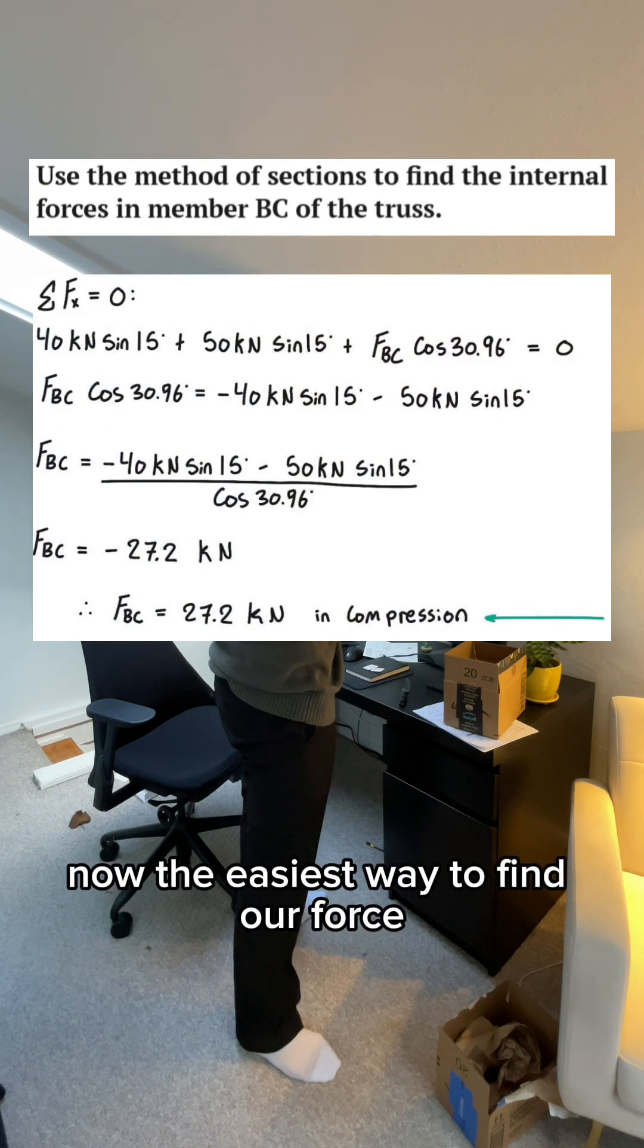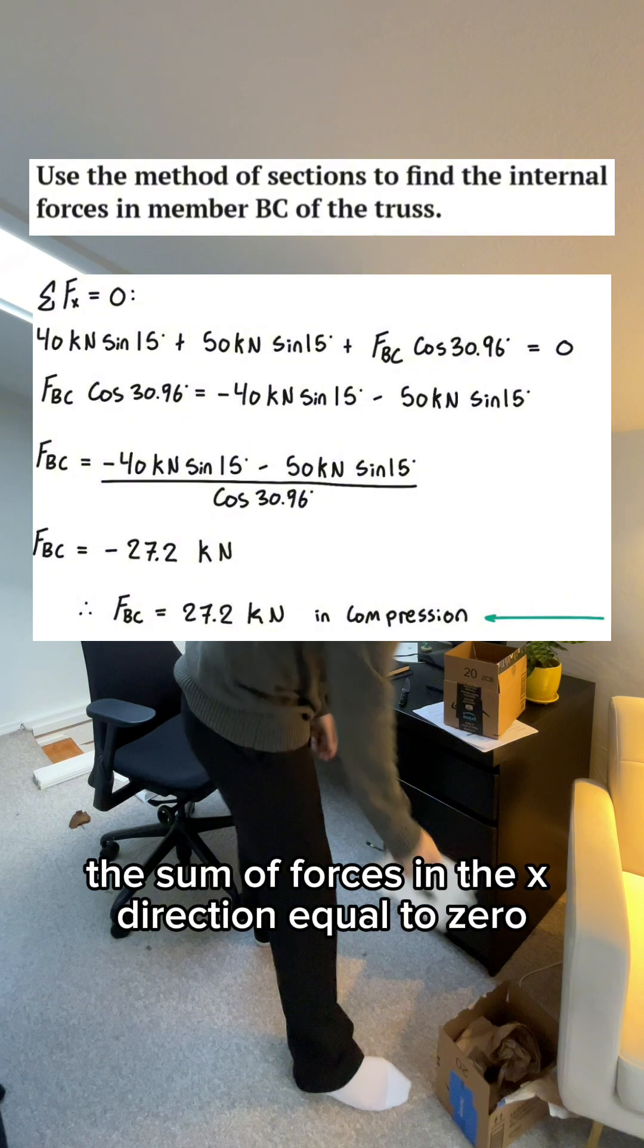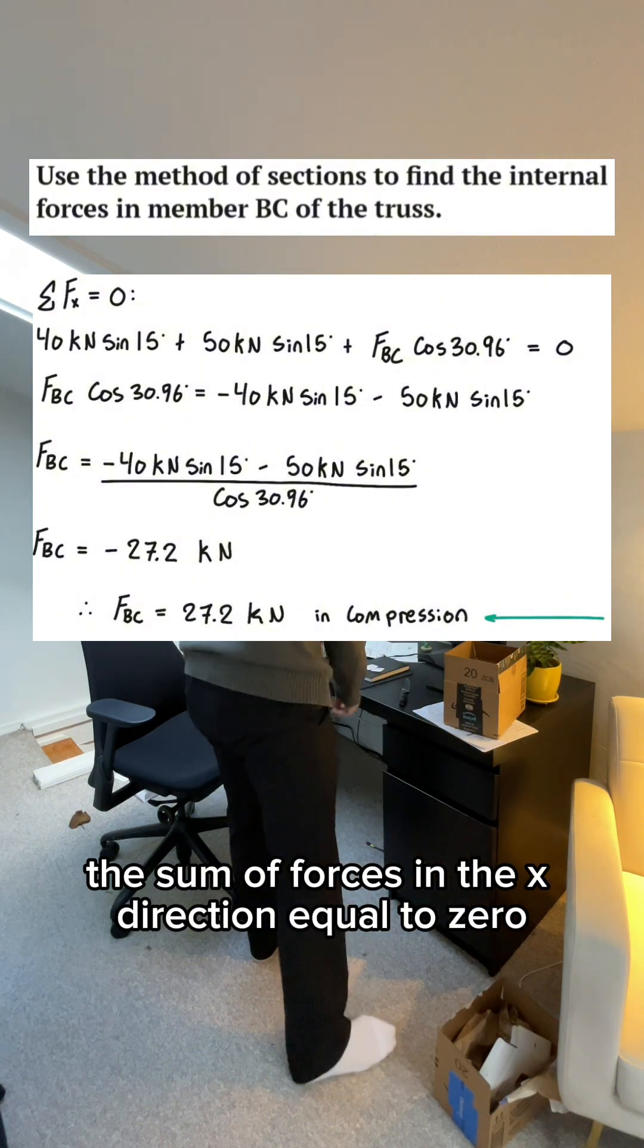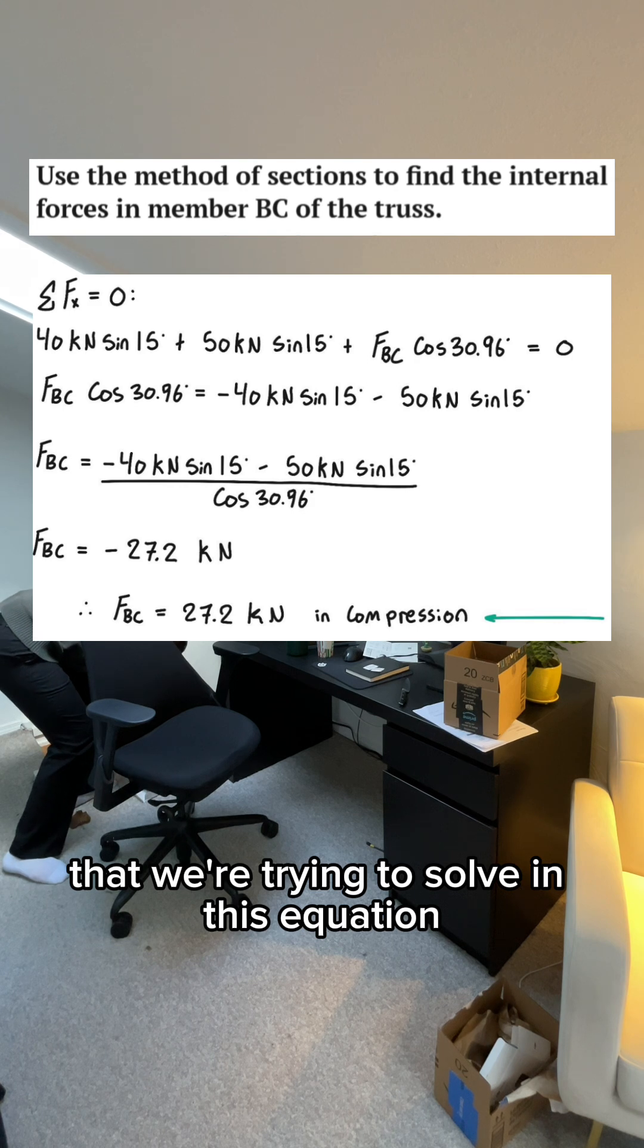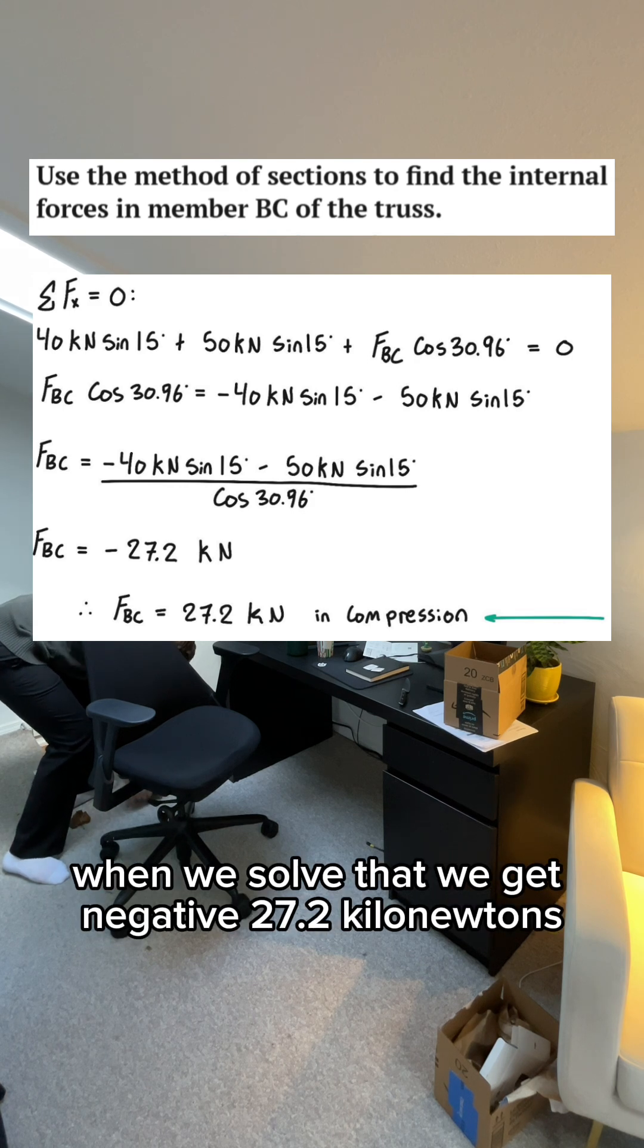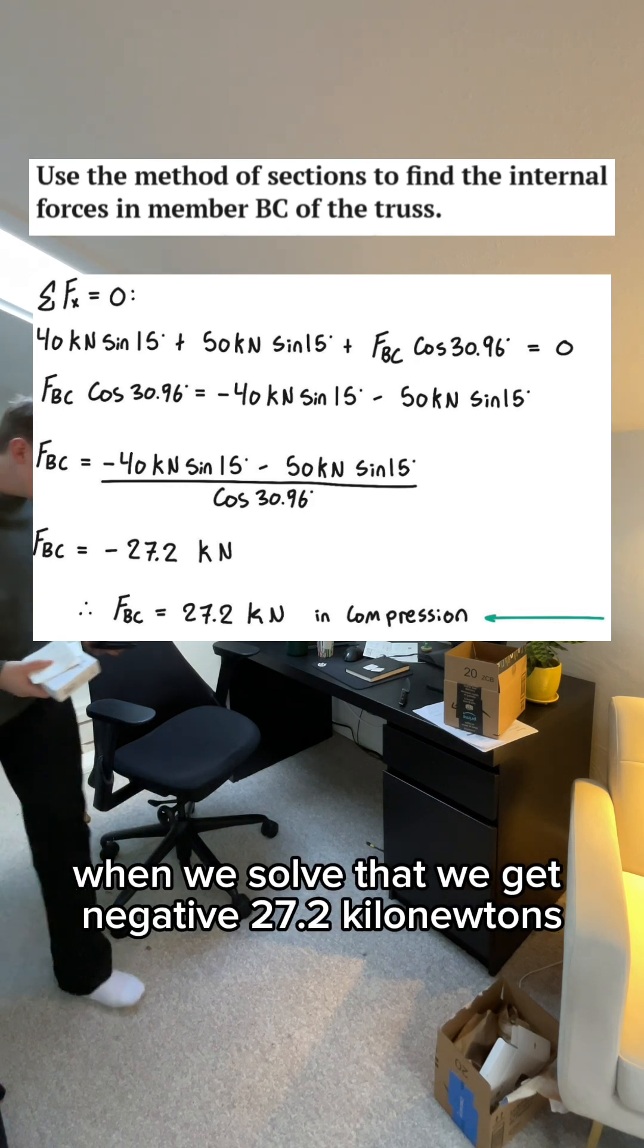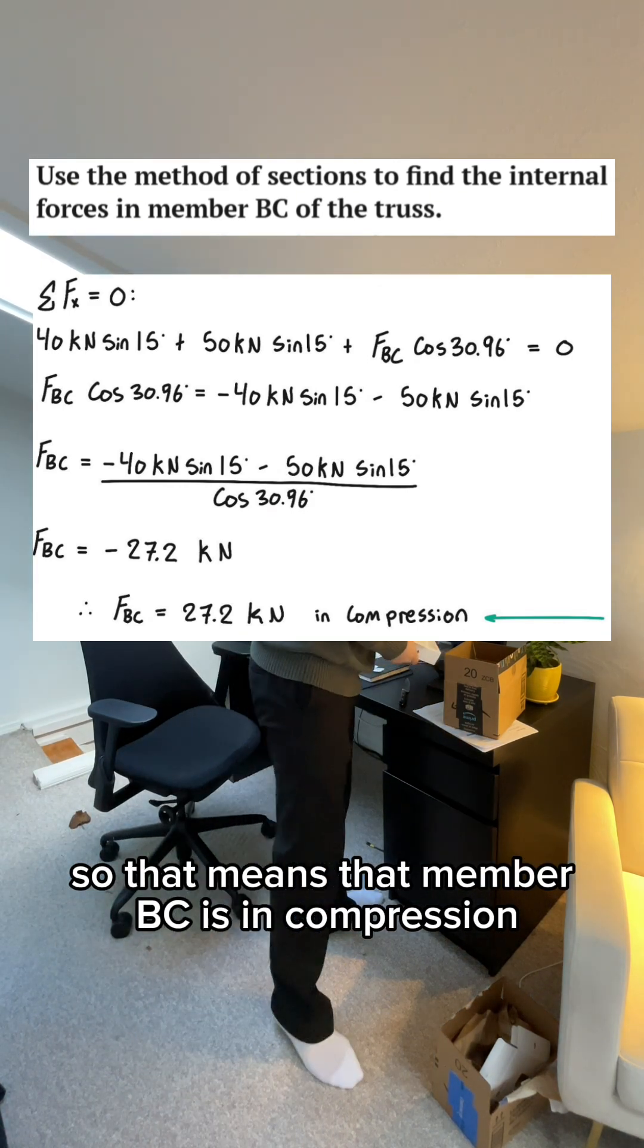Now the easiest way to find our force in this case is to use the sum of forces in the x direction equal to zero. We've got two external forces and the internal force that we're trying to solve in this equation. When we solve that, we get negative 27.2 kilonewtons, so that means that member BC is in compression.